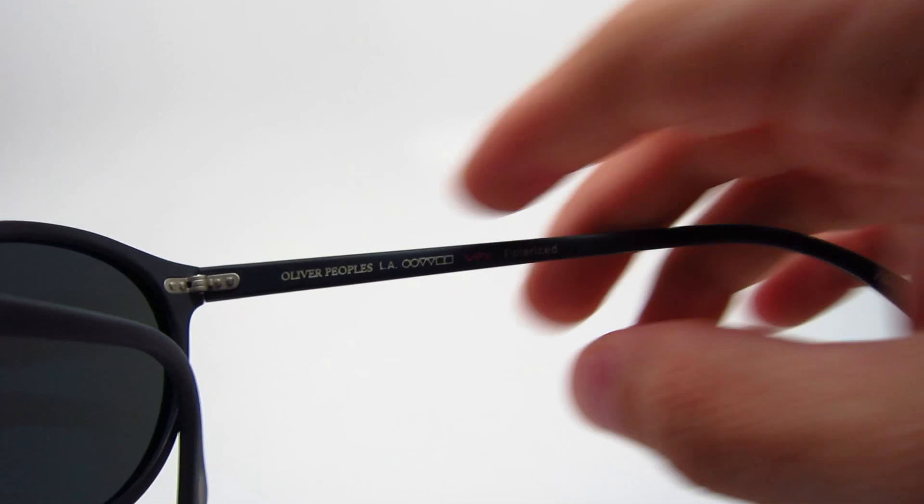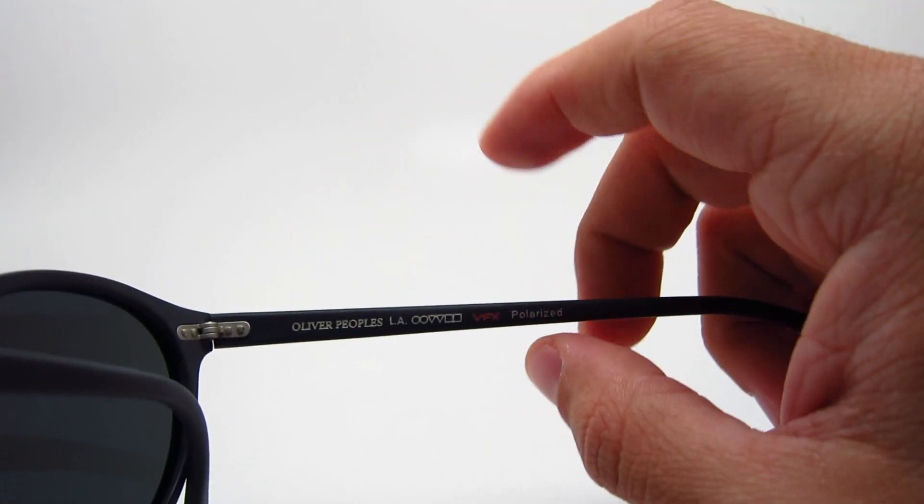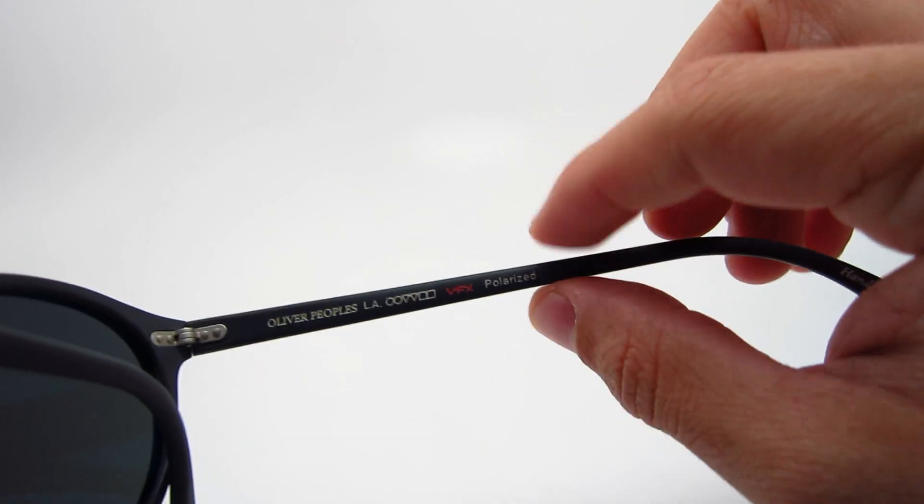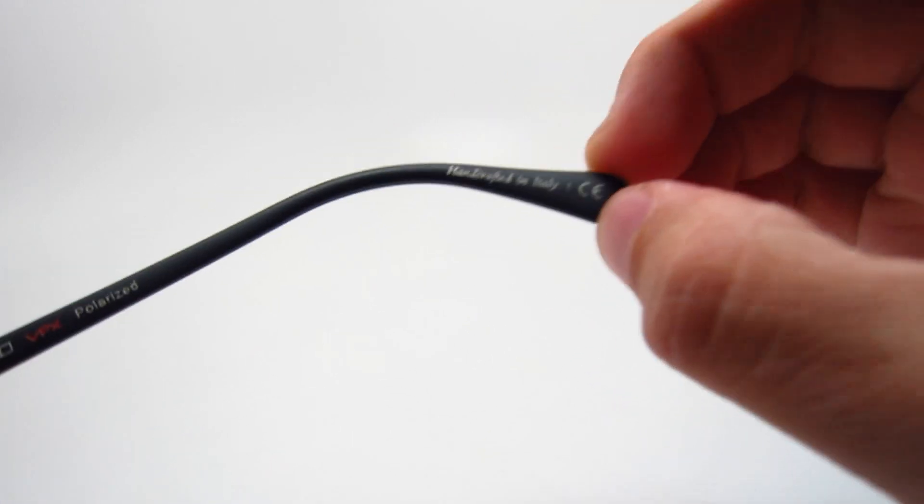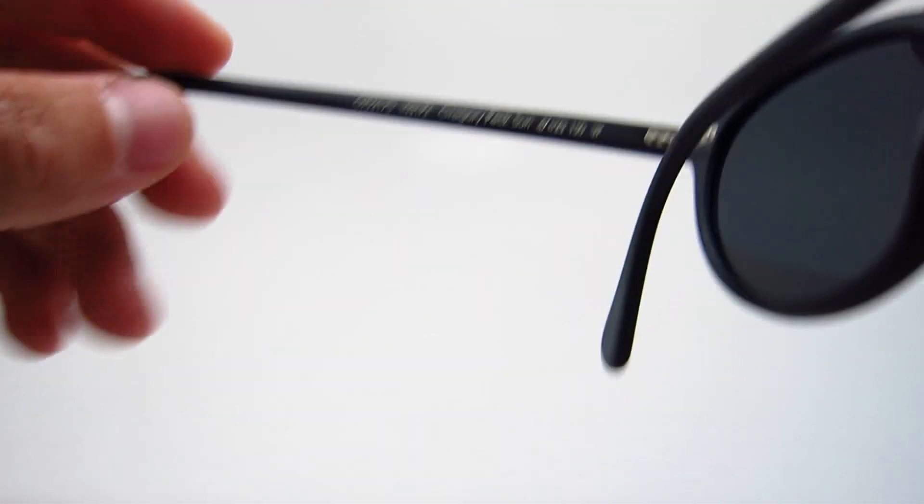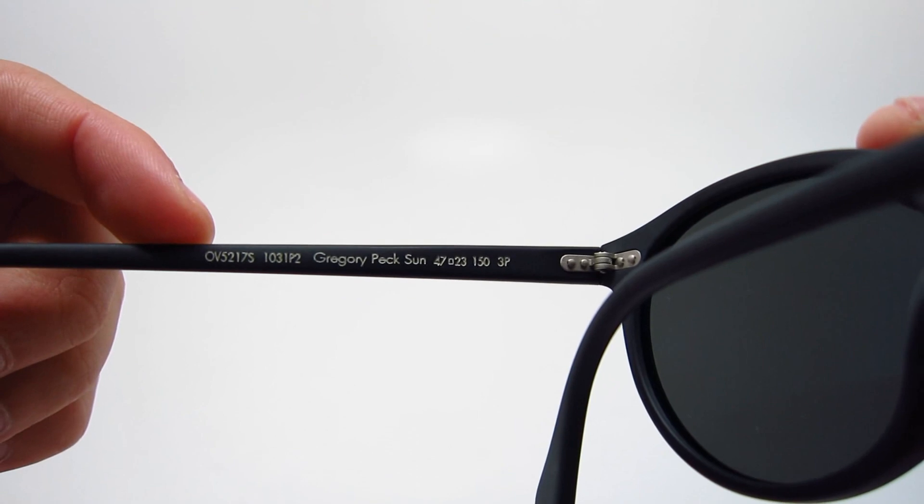On the inside, it reads Oliver Peoples LA with the Oliver Peoples logo. This one has VFX polarized lenses and says handcrafted in Italy.